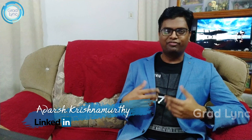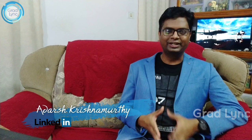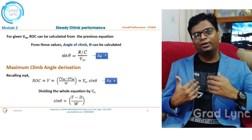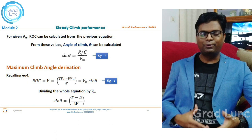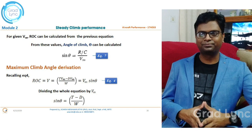If I know the free-stream velocity and the rate of climb, I can calculate the angle of climb using equation number 7: sin θ = rate of climb / V∞. The next question we should ask is: what are the maximum values of rate of climb and angle of climb? Can we keep increasing the rate of climb or climb at any angle? That is the question we will answer in the coming sections.